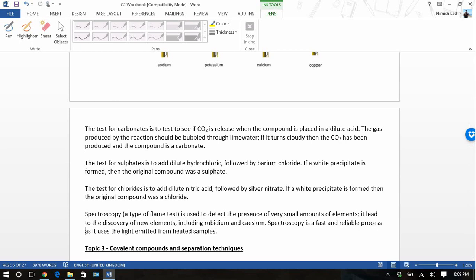Spectroscopy is just a type of flame test. It's used to detect the presence of very small amounts of elements. It can lead to discovery of new elements as well, including rubidium and cesium. Spectroscopy is fast and reliable and uses the light emitted from heated samples. That's the end of Topic 2 Edexcel C2 Chemistry.